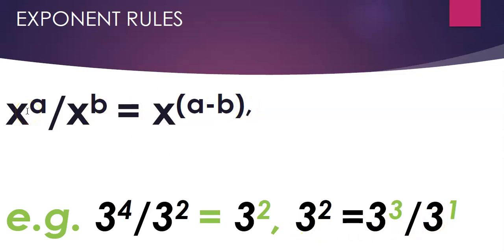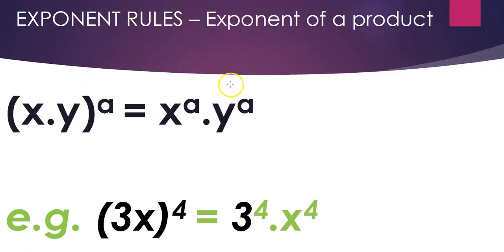Moving on: when you have an exponent of a product — say you have (xy) raised to the power a — the rule is you get x to the power a times y to the power a. For example, when you have (3x) raised to the power 4, it's the same as 3 to the power 4 times x to the power 4. Anything within parentheses gets raised to the power outside the parentheses.